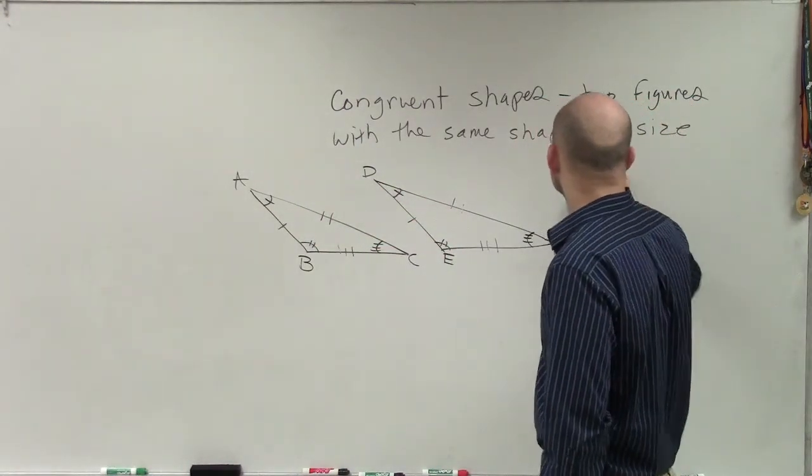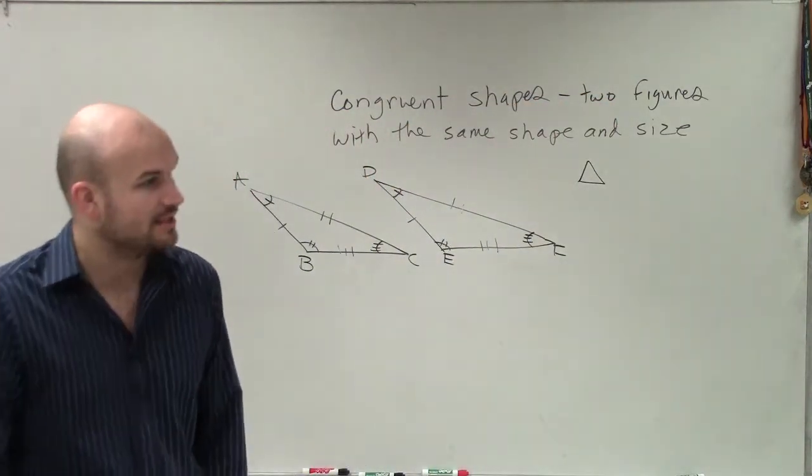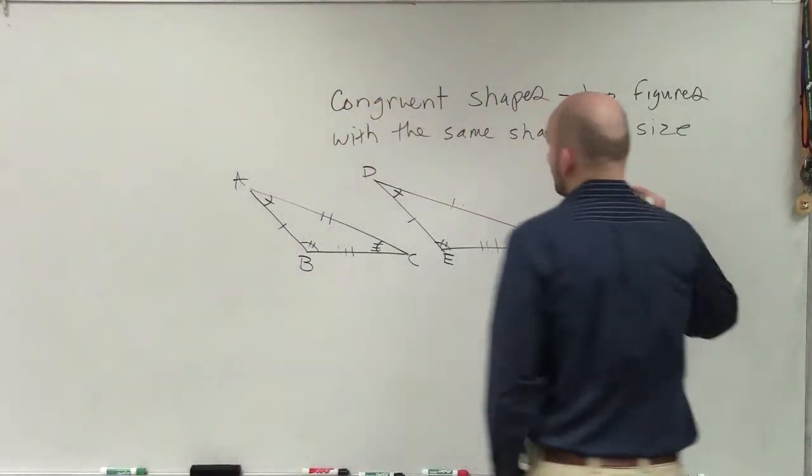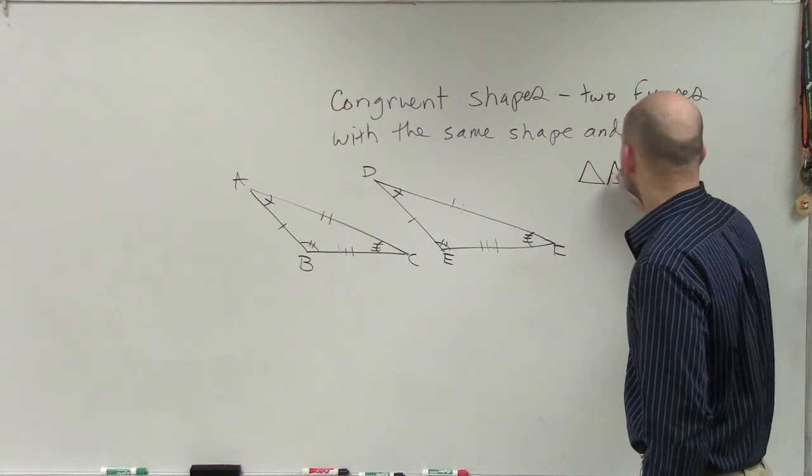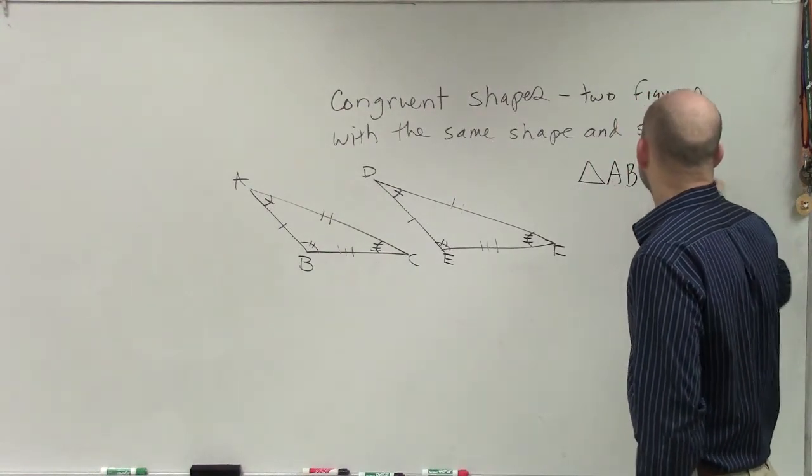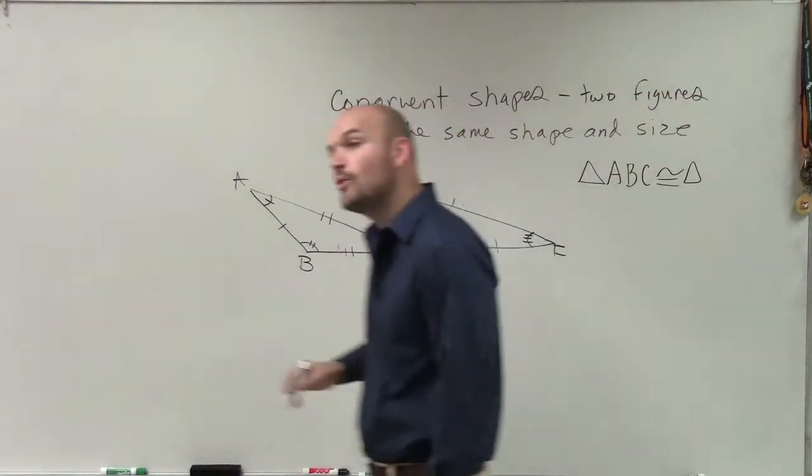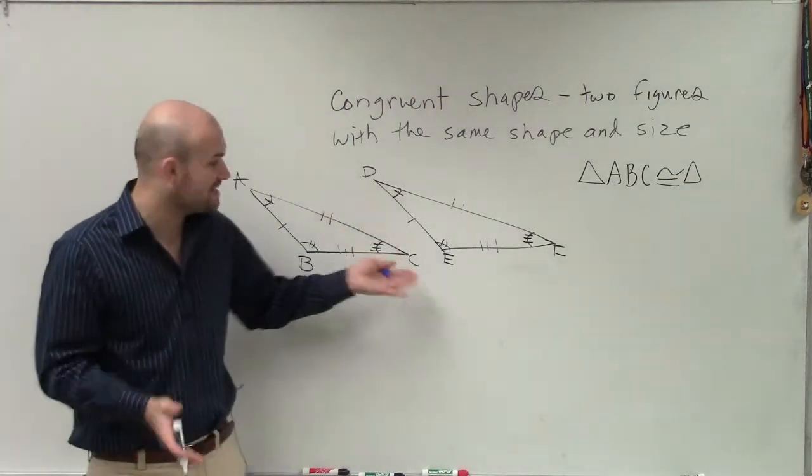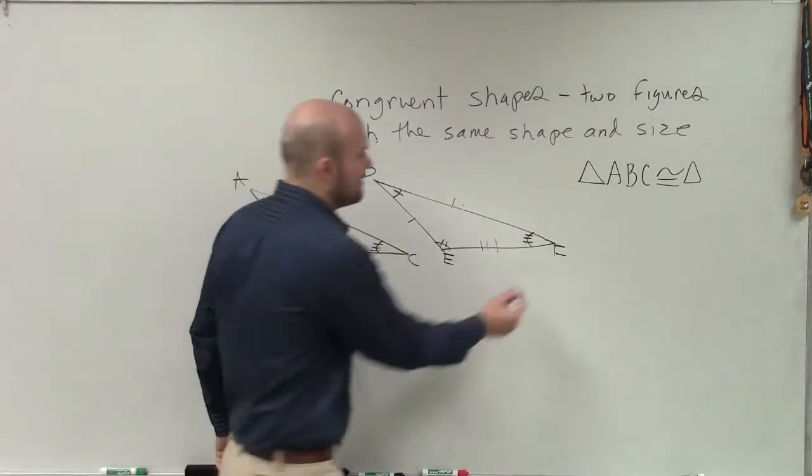So when I'm talking about these two triangles are congruent, I'm going to write triangle, because we're talking about triangles, not angles or a plane. So if I'm going to label this, I'll label this ABC is congruent to triangle... Now, it's important that when you label congruency, you label them in the exact same order. So ABC is congruent to DEF, okay?